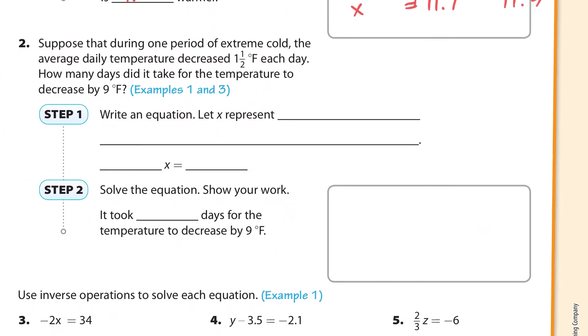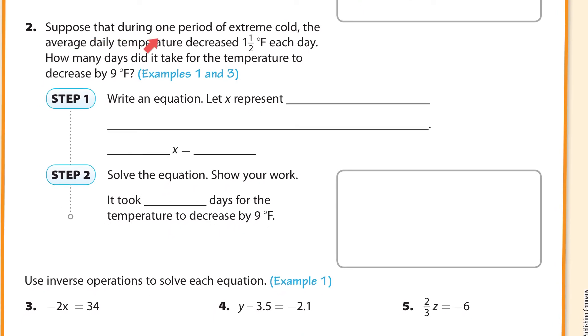Here we have number two. Suppose that during one period of extreme cold, the average daily temperature decreased by 1.5 degrees Fahrenheit each day. How many days did it take for the temperature to decrease by 9 degrees Fahrenheit? So we're going to write an equation, and x is going to represent how many days it took for the temperature to decrease 9 degrees Fahrenheit.